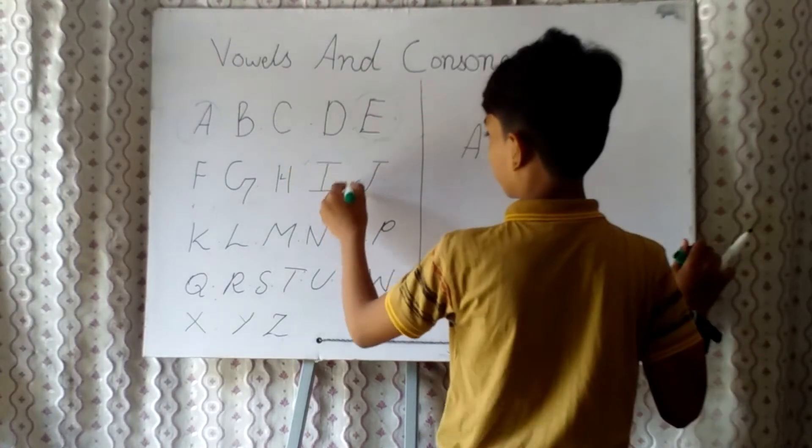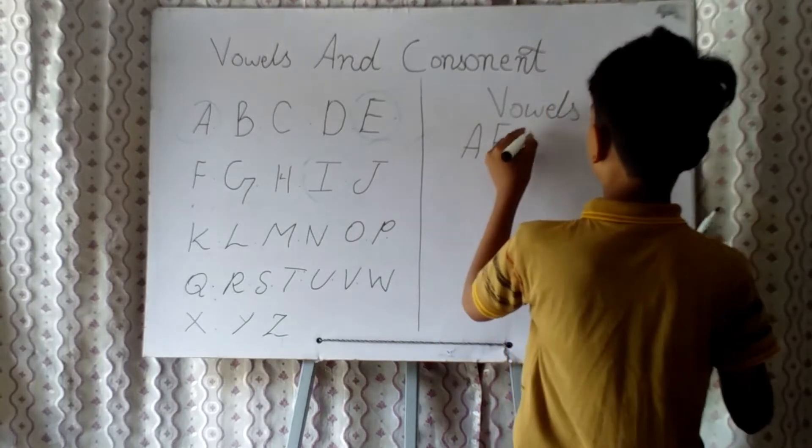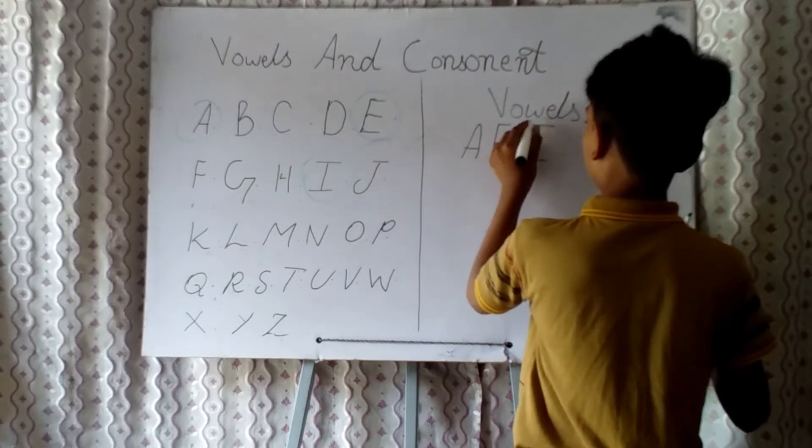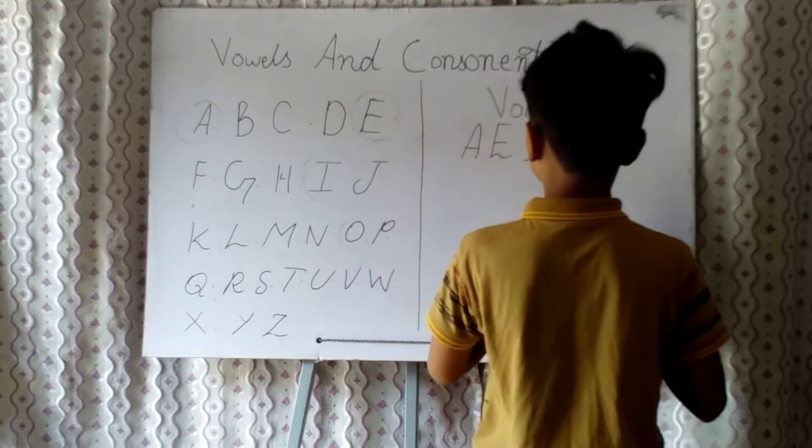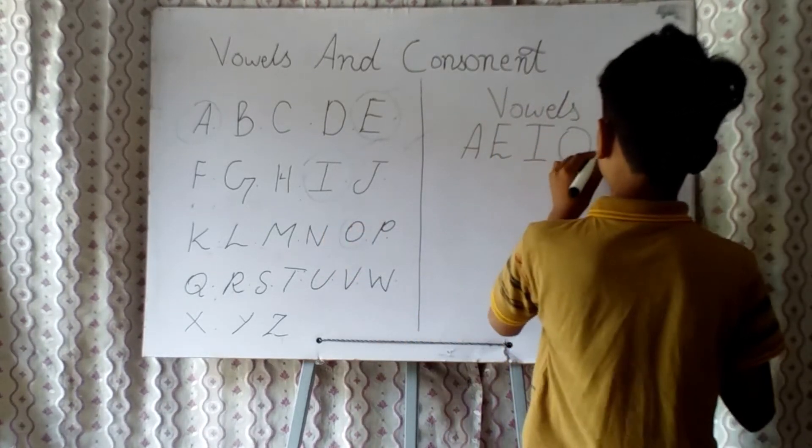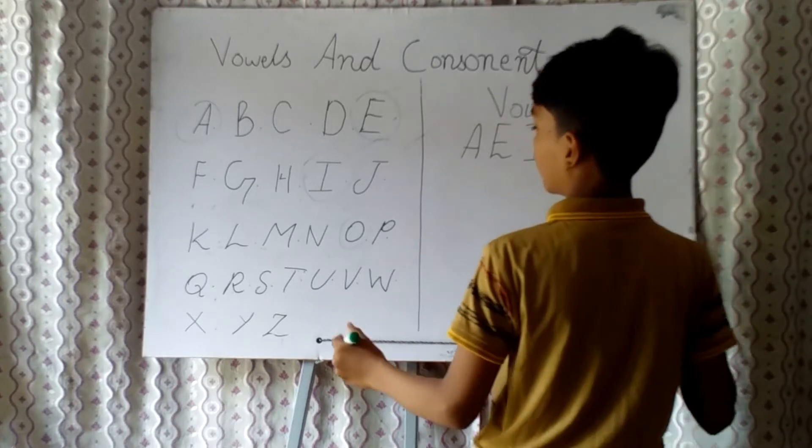First A, then I, and then O. We can write it out, then U.